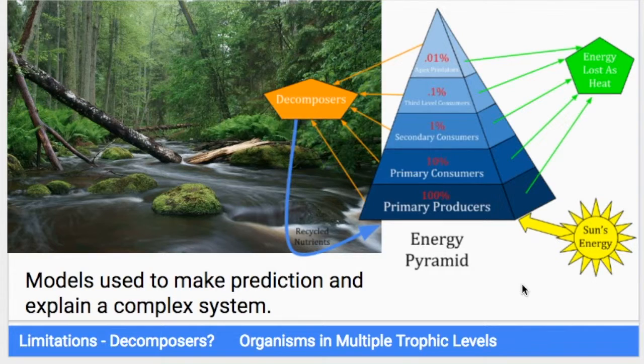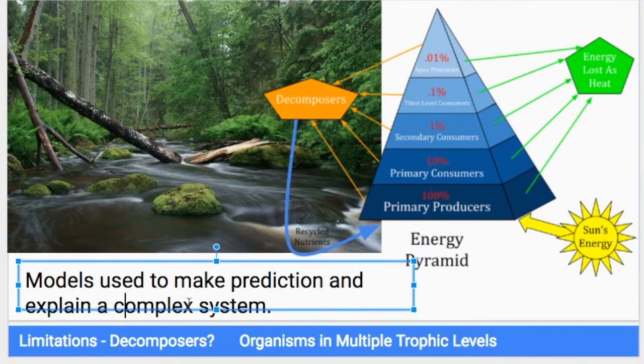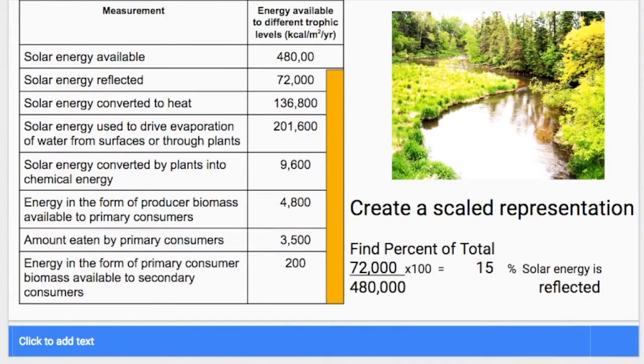In class this week, we are going to be analyzing some data, putting it into a model representation, in order to make some predictions, help us to explain a complex system that is energy flow. So this data comes from this forest called Hubbard Brook, and it's in New Hampshire. Some scientists went into this forest, and they made a whole bunch of measurements.